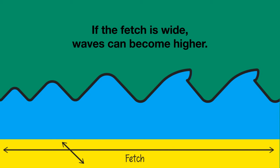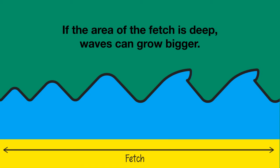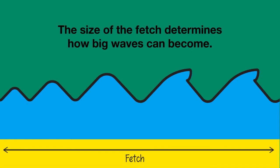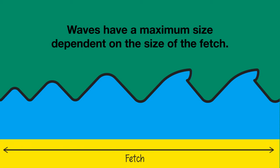If the fetch is wide as well as long, waves can also become higher because there are no shores to cause any friction. Similarly, if the area of the fetch is deep, there is also less friction and waves can grow higher. So the size of the fetch determines how big waves can become. Waves have a maximum size and this depends on the size of the fetch.